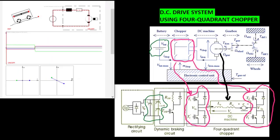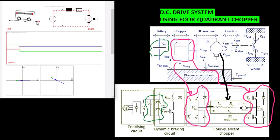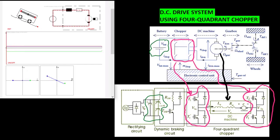A four-quadrant chopper circuit can easily control a DC machine whose rated power is below several tens of kilowatts. In particular, a DC servo motor whose rating is less than a few kilowatts is usually controlled by this circuit.